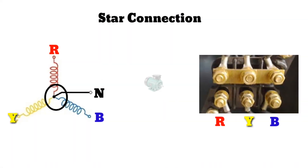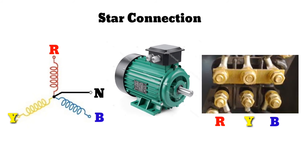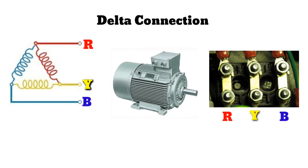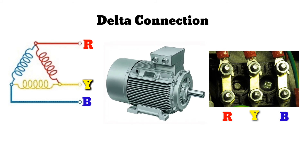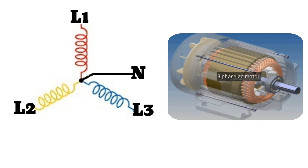Star connected motors have a central connected point called the star point, and each winding receives phase voltage. Star connected motors only run at one third of the motor's rated torque and power. In delta connection, the opposite ends of the three coils are connected together; the end of each coil is connected with the starting point of another coil, and three wires are taken out from the coil joints. The star connection provides a low voltage across each winding so the current will be less compared to delta connection. For this reason, an induction motor is started with star connection to reduce the starting current by reducing the voltage across the windings.